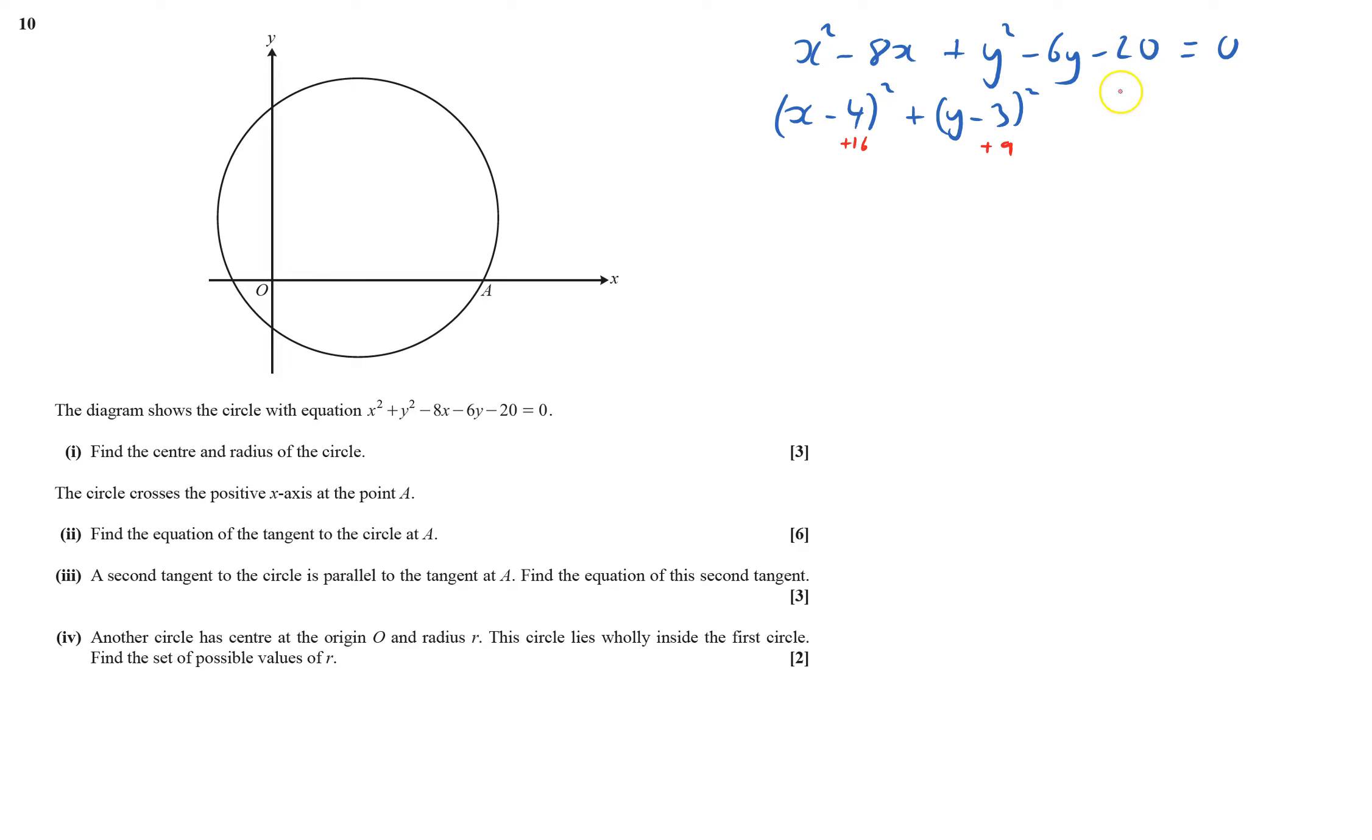That gives me plus 25, but I want minus 20, so I need to take away 45. This equals 0. Now in complete square form: x minus 4 squared plus y minus 3 squared equals 45. Therefore, center is (4,3) and radius is square root of 45. That's the first bit done.